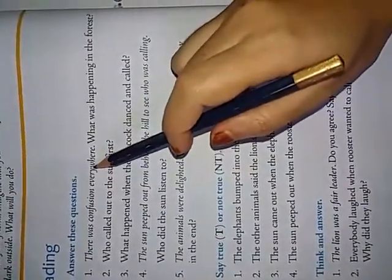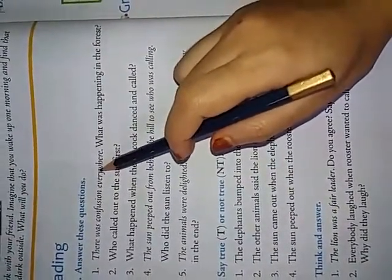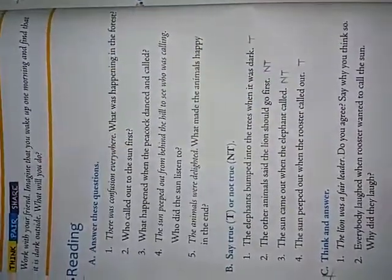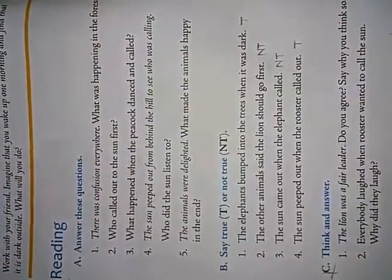Why was everyone confused there? Because the sun was hiding behind a hill and everything was dark. Then, the animals could not see each other and bumped into the tree.